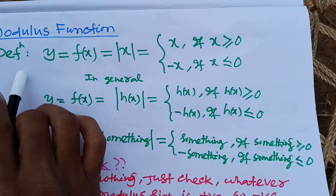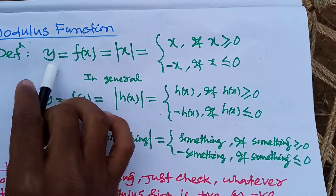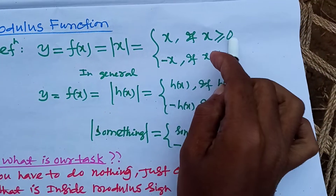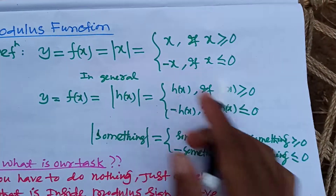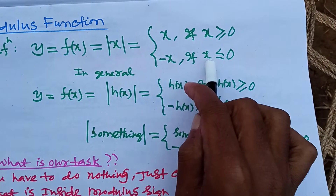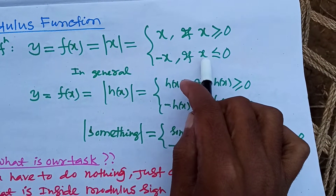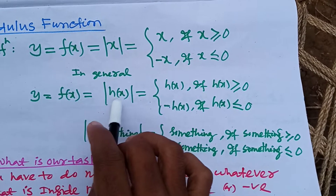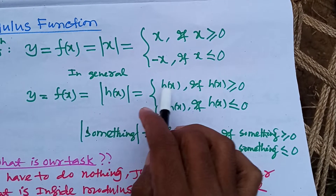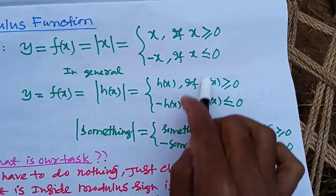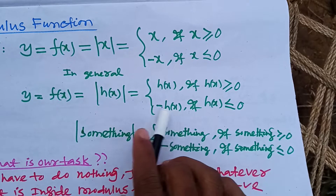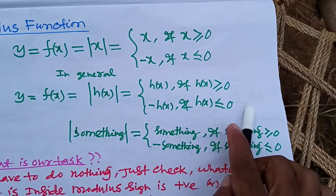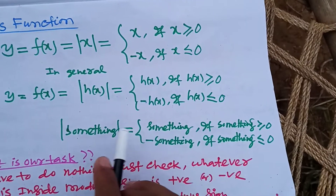Here is the definition of the modulus function. It says that y = f(x) = |x|, which equals x if x is greater than or equal to zero, or minus x if x is less than or equal to zero. In general, |h(x)| equals h(x) if h(x) ≥ 0, or minus h(x) if h(x) ≤ 0.